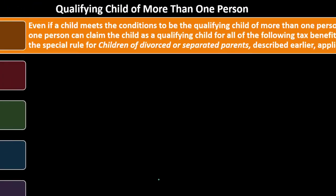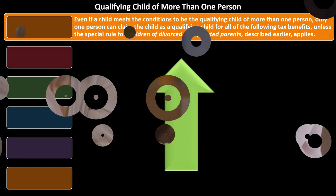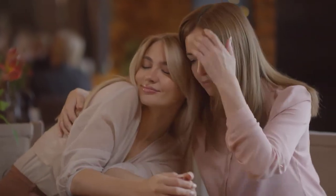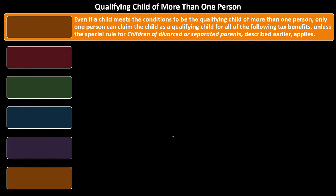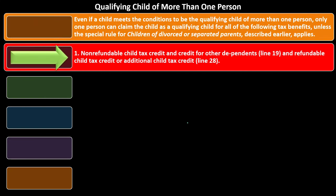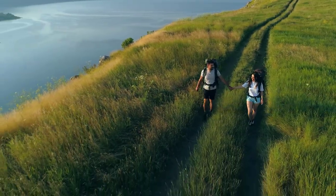Qualifying child of more than one person: generally it's fairly straightforward as to whether someone will be a dependent on one person's return. But what if there's a situation where they meet all the requirements for two people? Two people can't report the same person — the IRS will bounce it back. Even if a child meets the conditions to be a qualifying child of more than one person, only one person can claim the child as a qualifying child for all of the following tax benefits, unless the special rule for children of divorced or separated parents applies. One: non-refundable child tax credit and credit for other dependents (line 19), and refundable child tax credit or additional child tax credit.